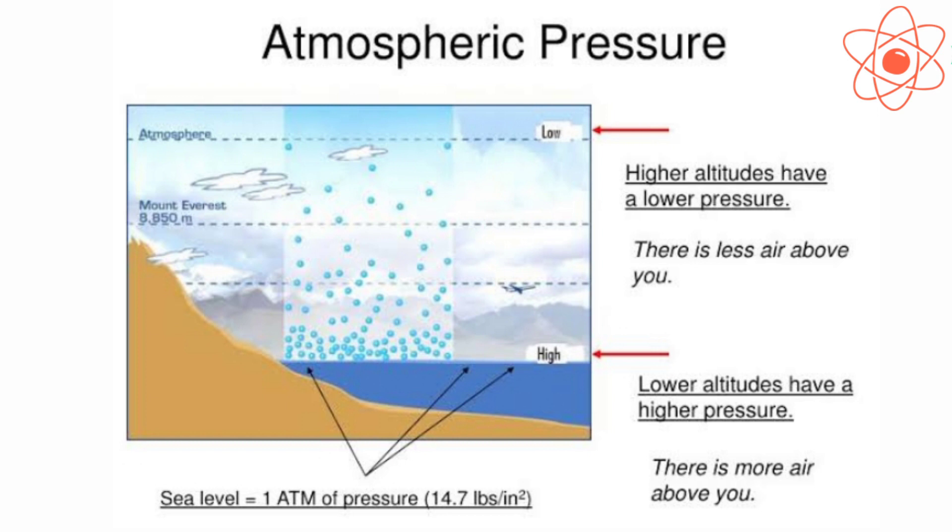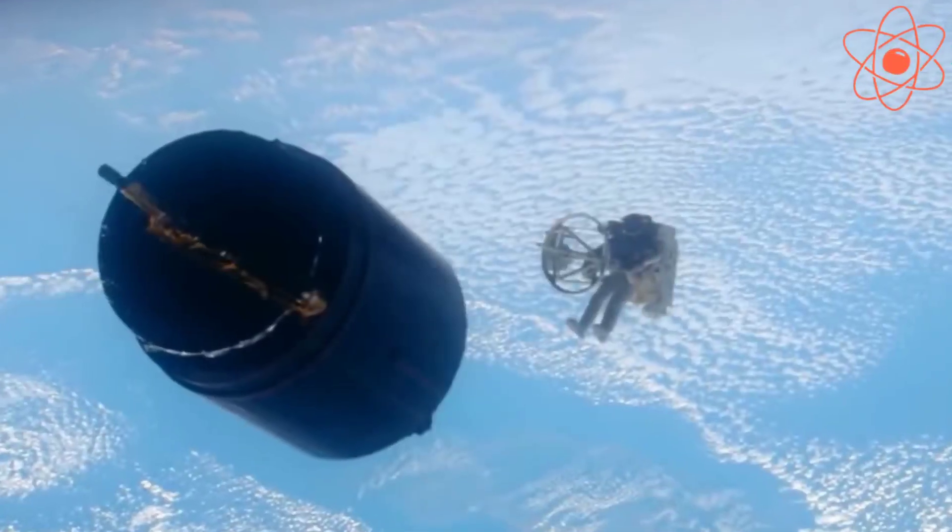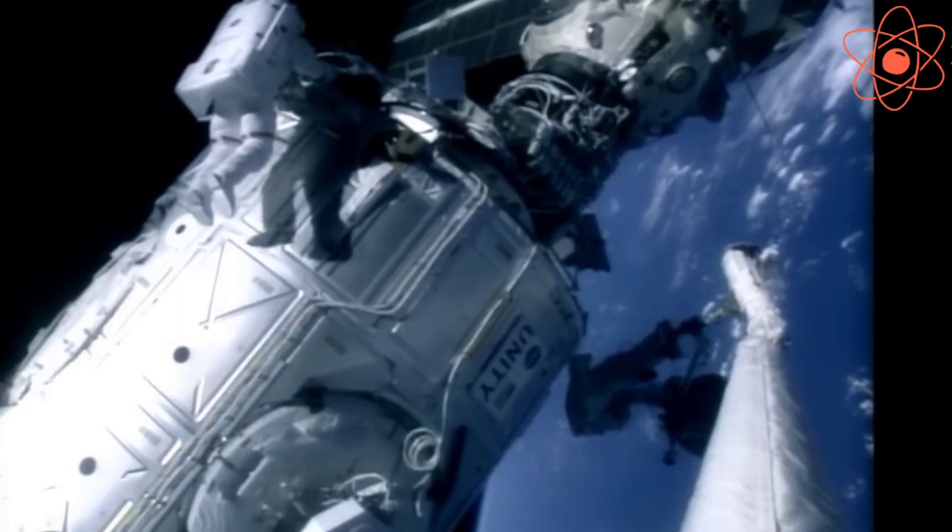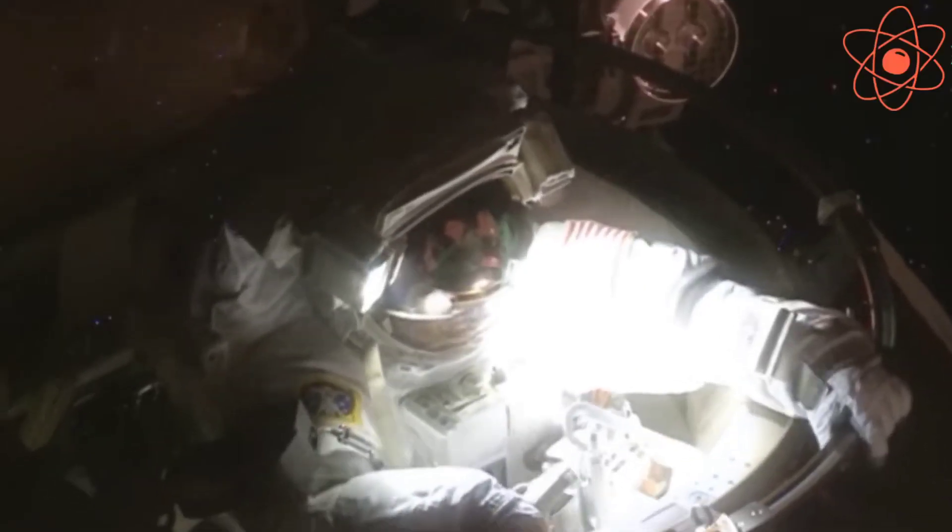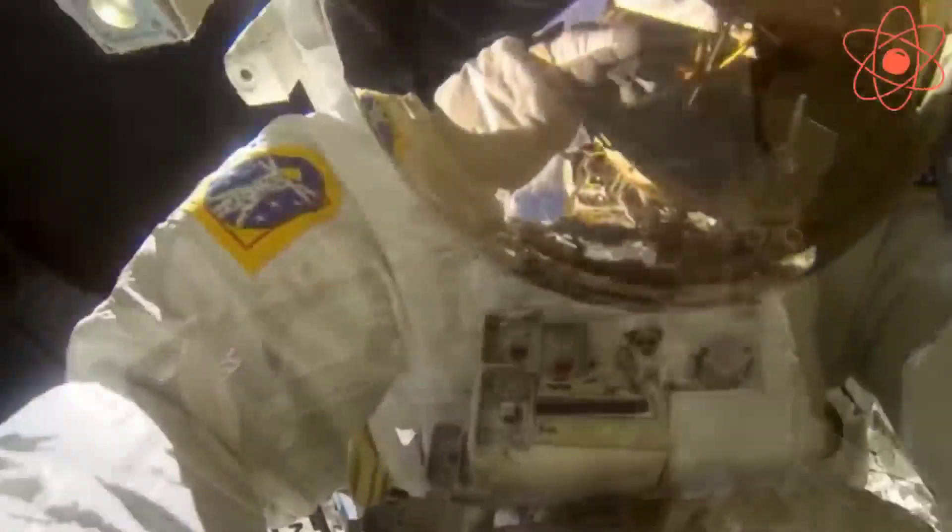As a result, some of the blood capillaries burst and blood comes out from the nose. Astronauts wear special suits while going to space. This is because in space there is no atmosphere. These special suits maintain the normal atmospheric pressure of the body.